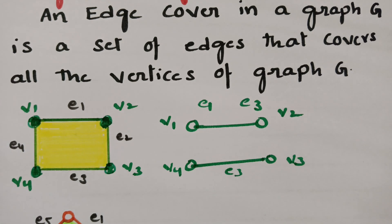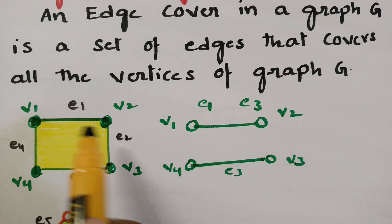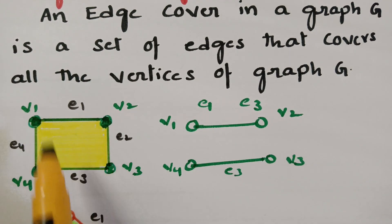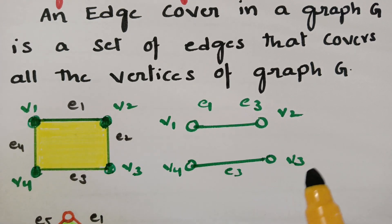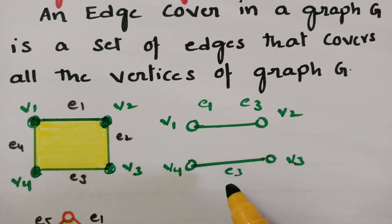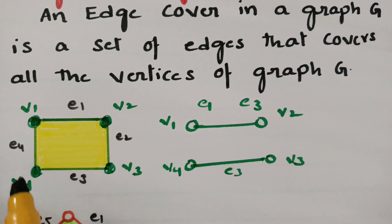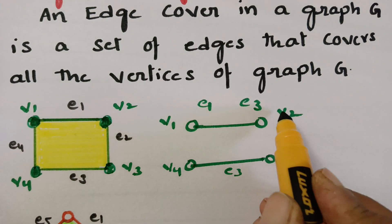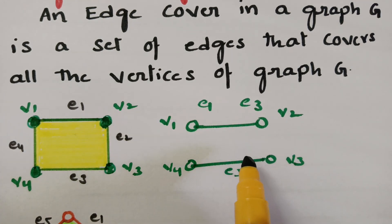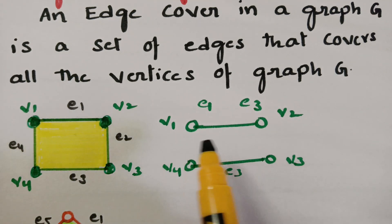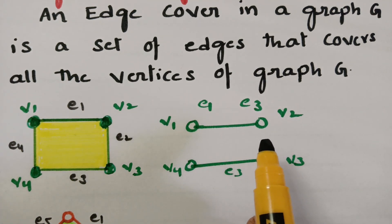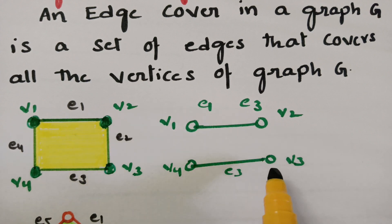You can also select other combinations like E2 and E4, or E1, E2, and E3 — all are valid edge coverings. Among these, the minimum edge cover requires just two edges, for example E1 and E3, or E2 and E4, which together cover all vertices V1, V2, V3, and V4. This is edge covering.